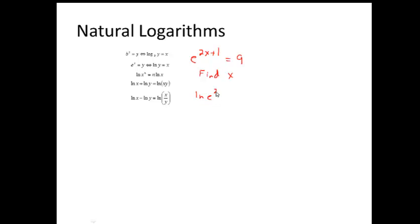And according to rule number 3 here, you bring out the exponent times ln of e equals ln of 9. ln of e equals 1, so you end up 1 times this term, which would leave this the same, and you have ln of 9.